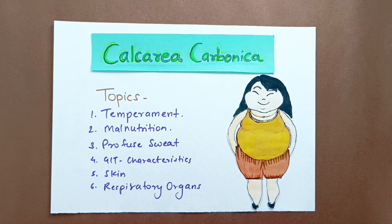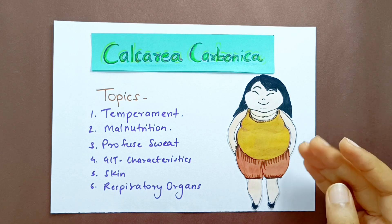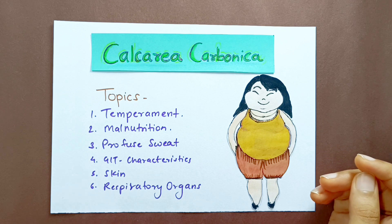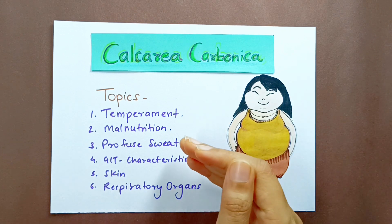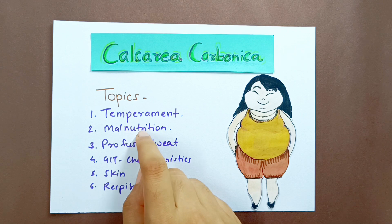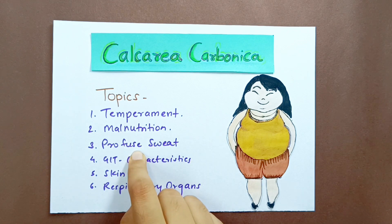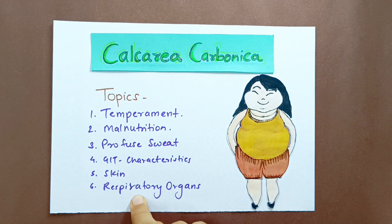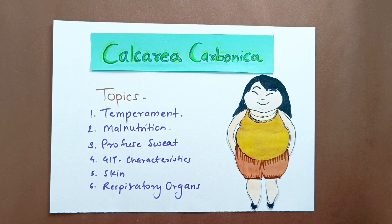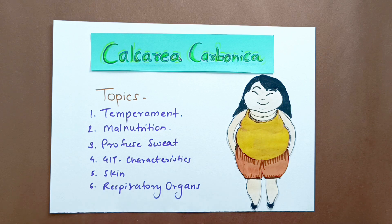Hello and Namaskar. After discussing Sulfur from the group of anti-psoric constitutional remedies by Dr. Nash, we come to the remedy Calcarea Carb. He discusses this remedy under topics of temperament, malnutrition, profuse sweat, characteristics of the GIT, skin, and respiratory organs. Dr. Nash compares Calcarea Carb extensively with Sulfur, making the discussion very interesting.